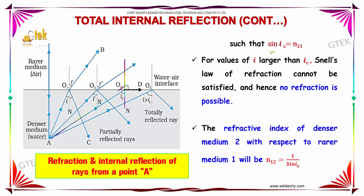Since sin Ic = N21, for values of I larger than Ic, Snell's law of refraction cannot be satisfied and hence no refraction is possible. The refractive index of the denser medium 2 with respect to the rarer medium 1 is given by N12 = 1 / sin Ic.